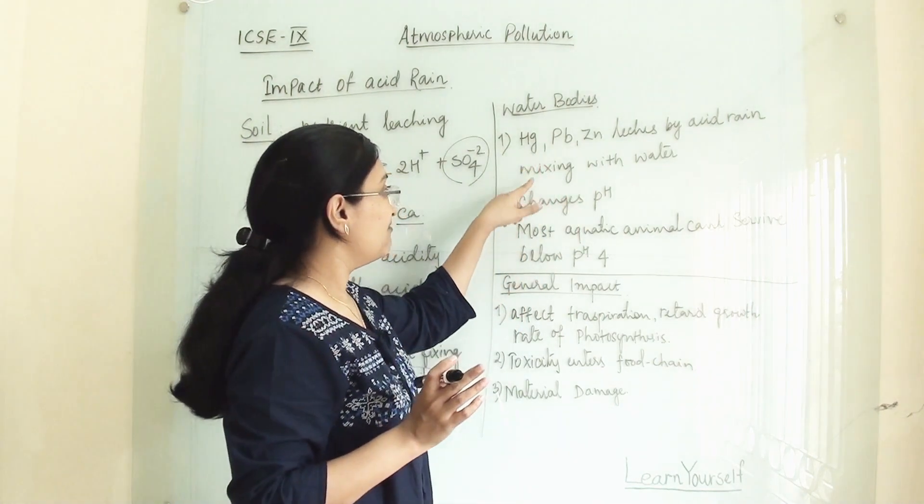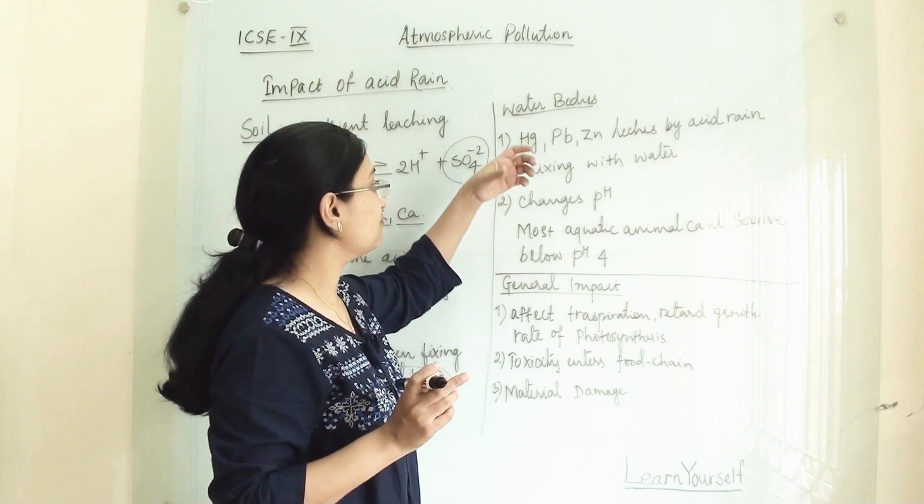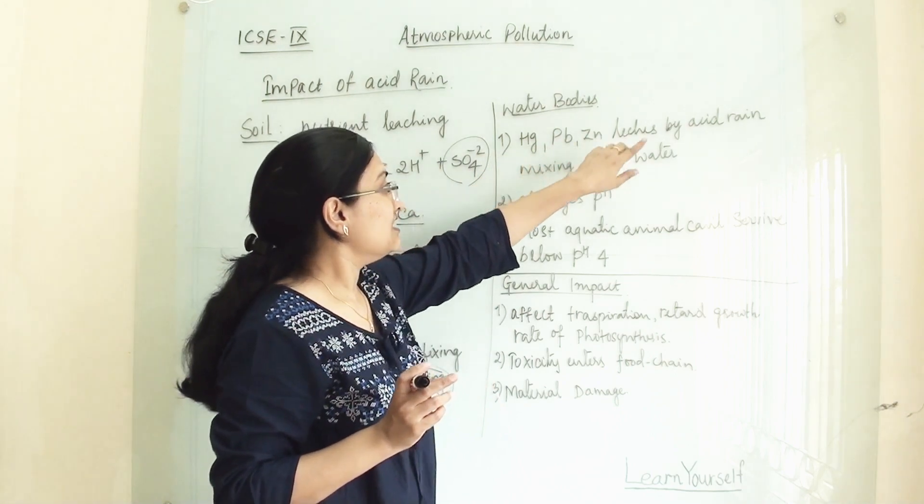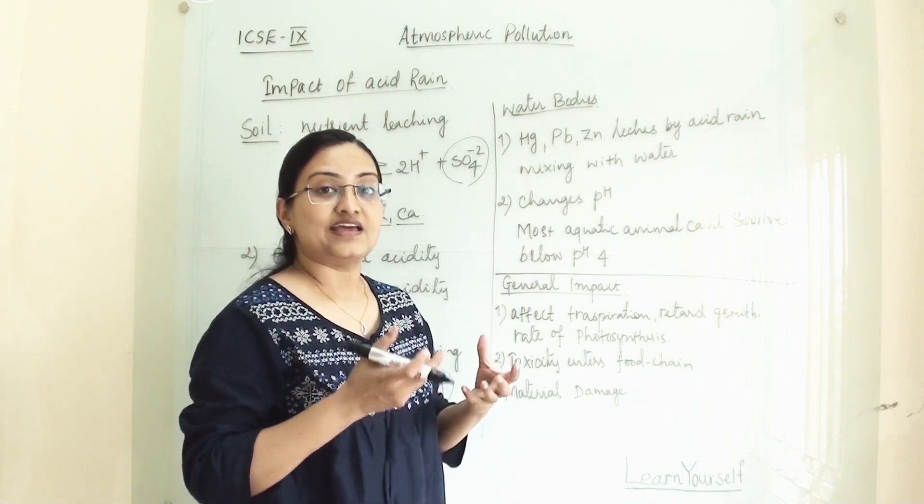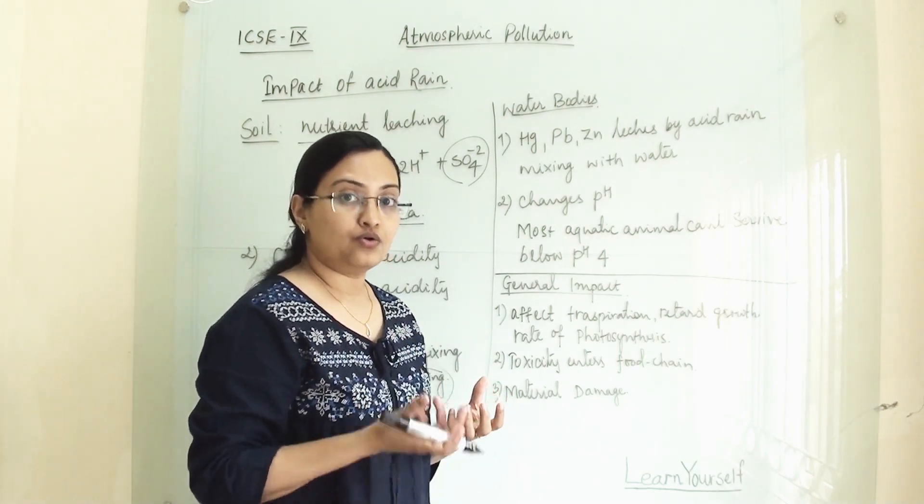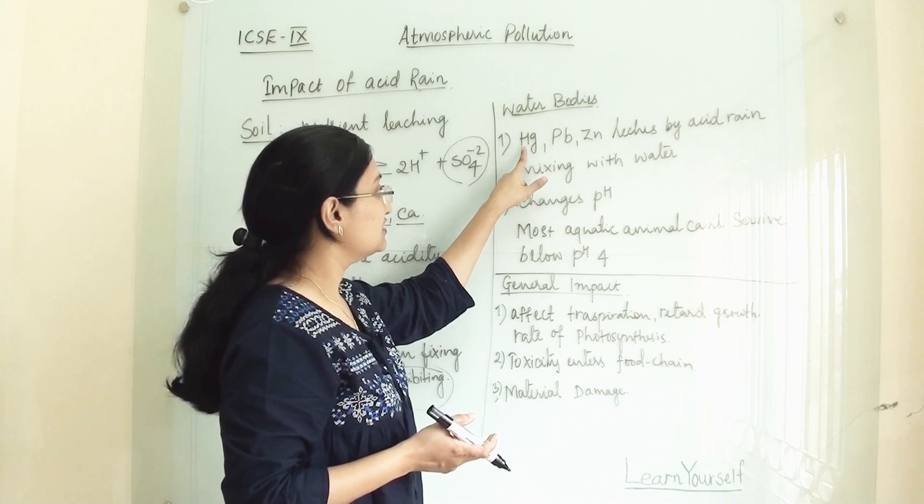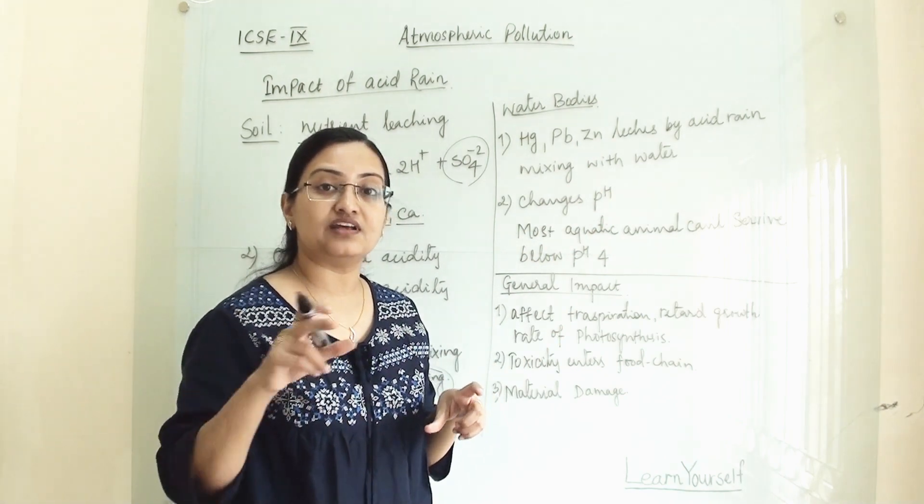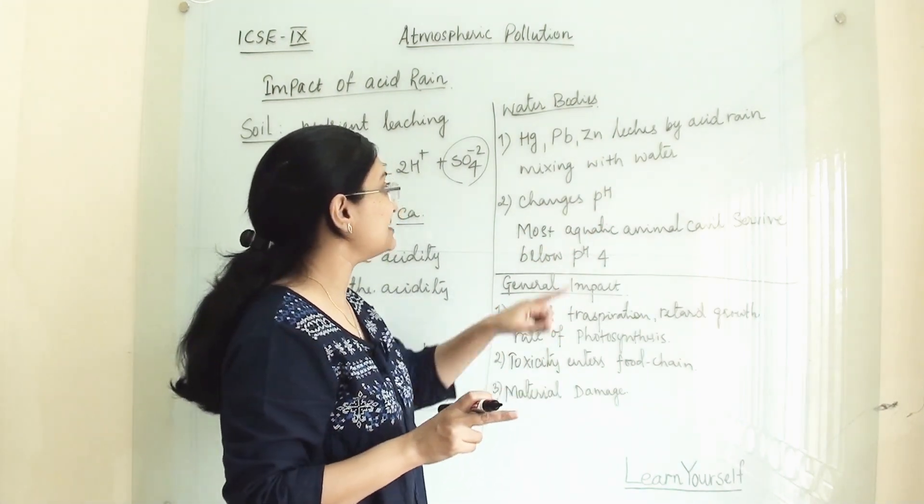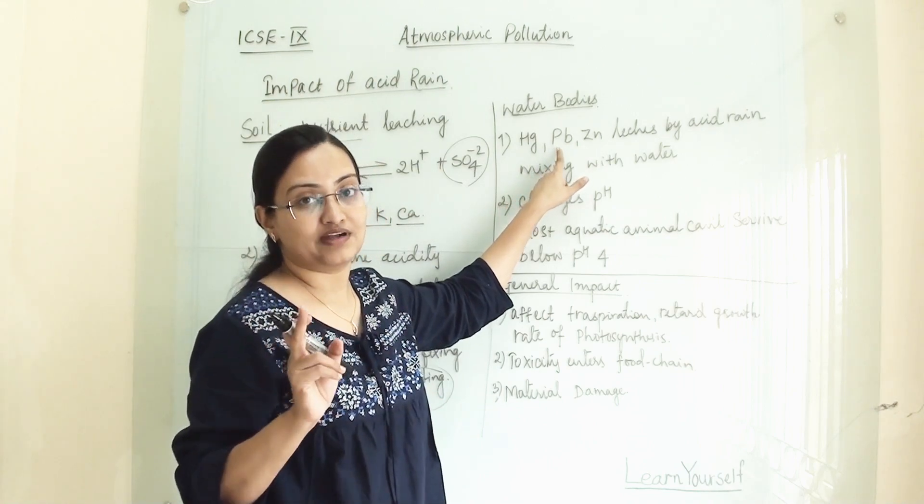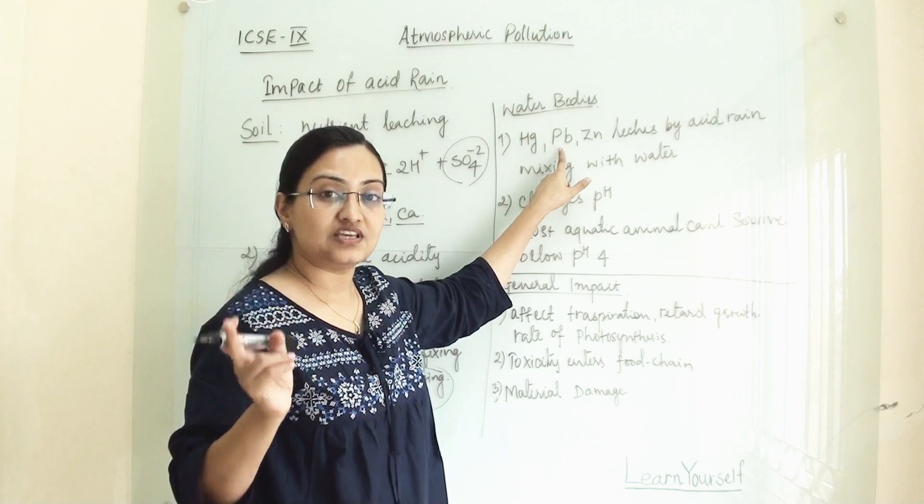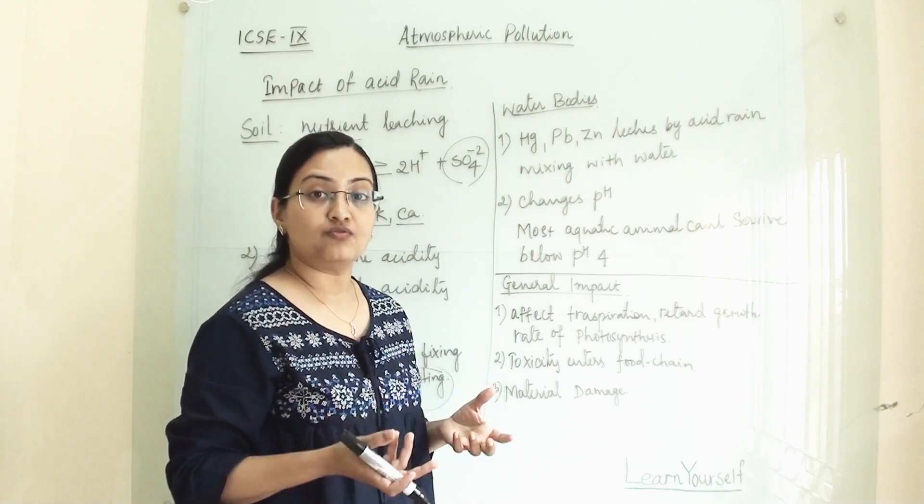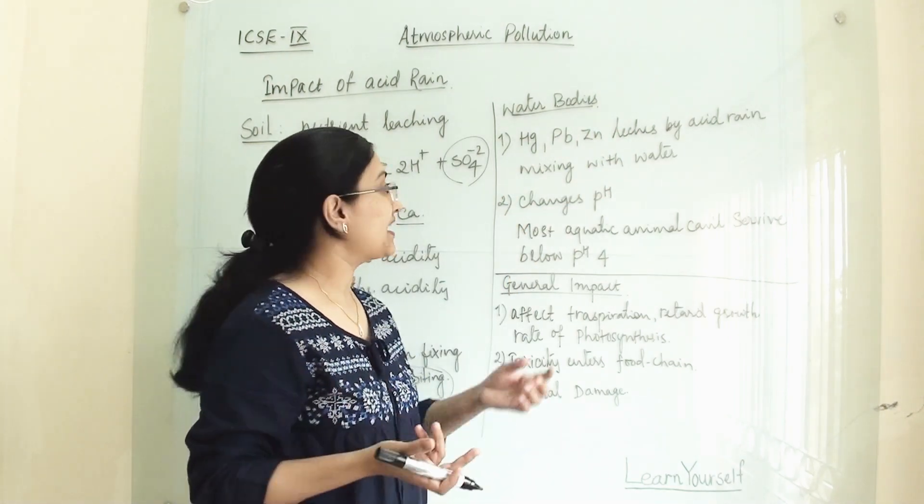Now coming to water bodies. When traces of acid mix with water bodies, mercury, lead, and zinc will mix with the water. How? As the rain falls on the ground, on the soil, it will combine with these heavy metals: mercury, lead, and zinc. When water flows towards the river and mixes with the river, the soil is mixing with the river and taking these heavy metals along with it. So our water body gets polluted by all these heavy metals.